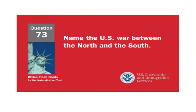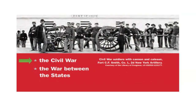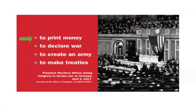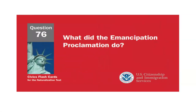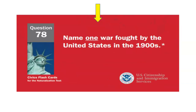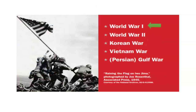Name the U.S. war between the North and the South. The Civil War. Under the Constitution, some powers belong to the federal government. What did the Emancipation Proclamation do? Free the slaves. Name one war fought by the United States in the 1900s. World War I.